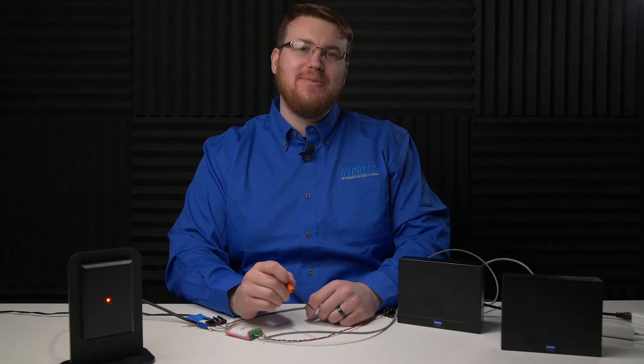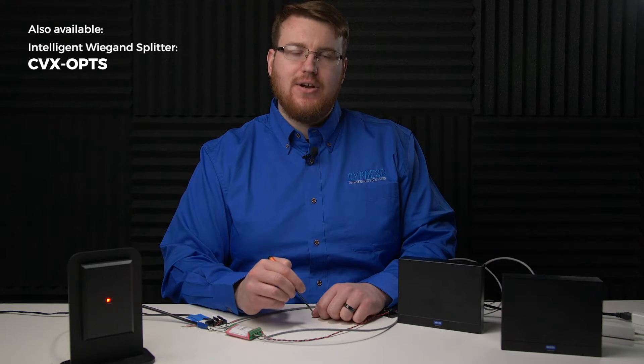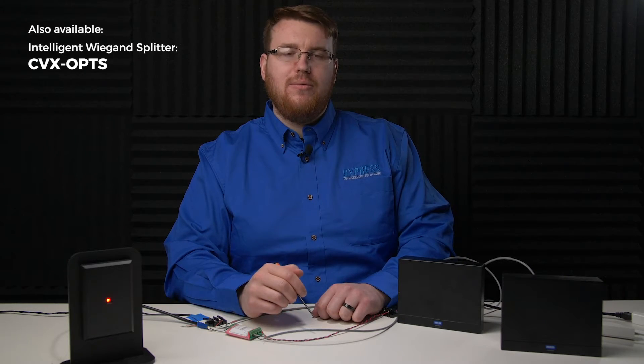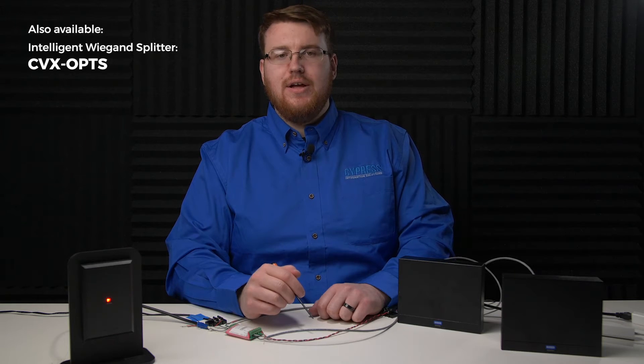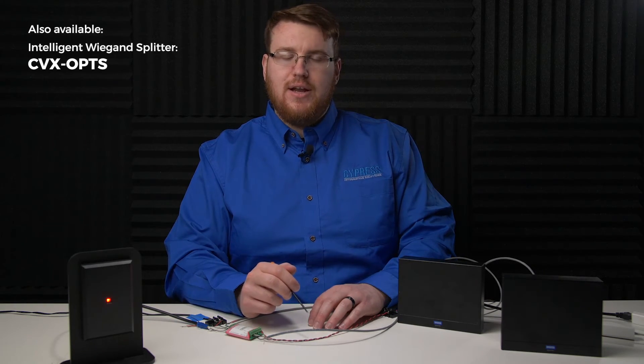That's how the Cypress Passive Wiegand splitter works. We also offer the intelligent Wiegand splitter, the CVX OPTS. It is a data router that connects to one Wiegand reader and two Wiegand access controllers and will route the data to the appropriate access controller. It is commonly used in multi-tenant applications.